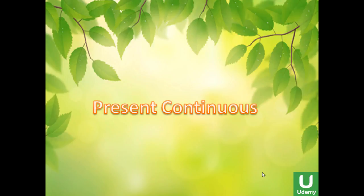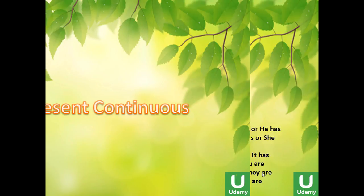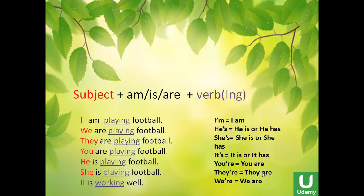Hello everyone, how are you doing today? I hope you're doing well. Let's talk about the present continuous. What does it consist of? It consists of the subject, plus the verb to be — am, is, or are — plus the verb with -ing added to it. The subjects are: I, we, you, they, he, she, and it.